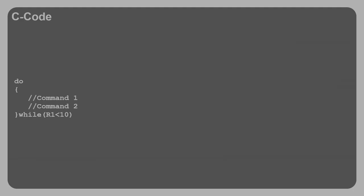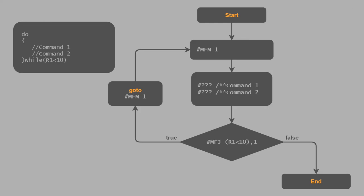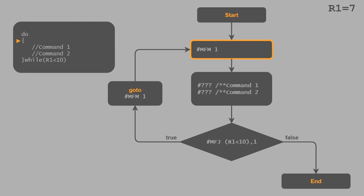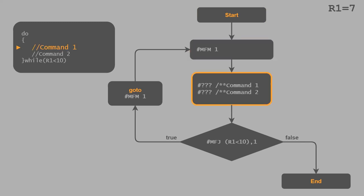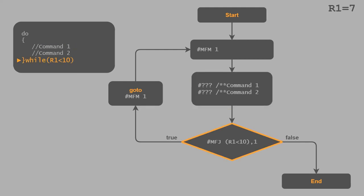We discussed the for loop, which has a fixed number of loop cycles. Now let's look at the do-while loop. The loop should be executed until register R1 is no longer less than 10. Using a flowchart, the required code in the macro script language is almost the same as for the for loop. This time we assume register R1 is 7. As before, we first set a jump marker, followed by the command lines to be processed within the loop. The do-while loop also uses the MFJ jump command.